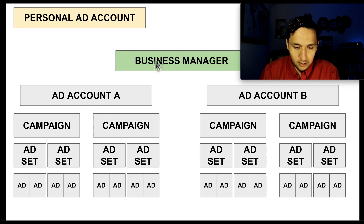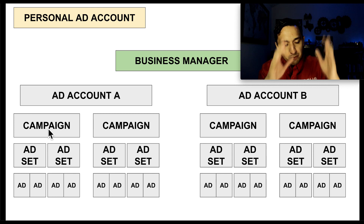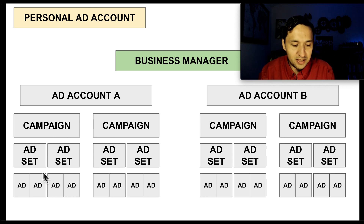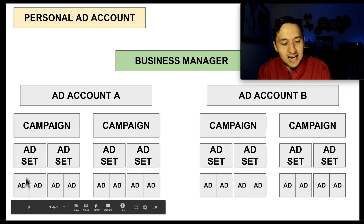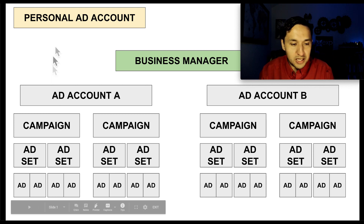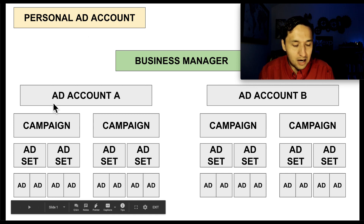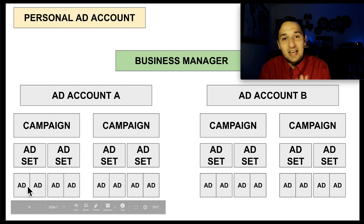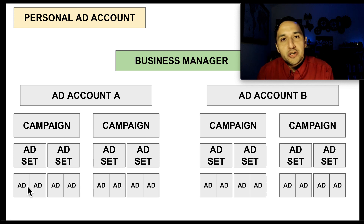So you see that you have the business manager, then you create your ad account, and from there is when you start creating your campaigns. This is something you're most commonly used to — we create a campaign, create the ad set, and then create the ad. Oftentimes we get started with the personal ad account, run a campaign, run an ad set, run an ad, and forget about it — but there's a structure to this.